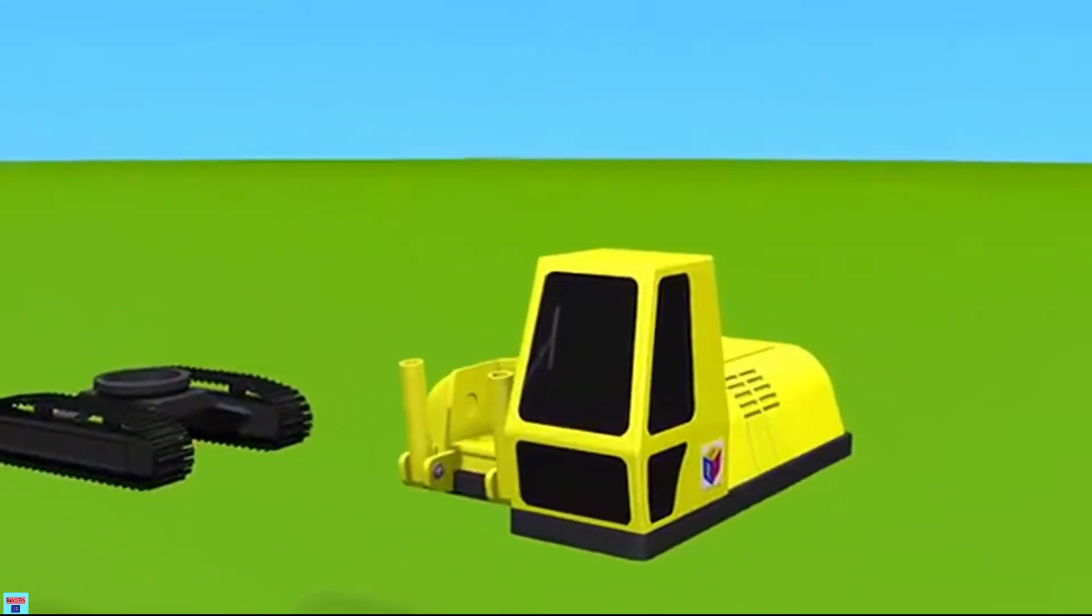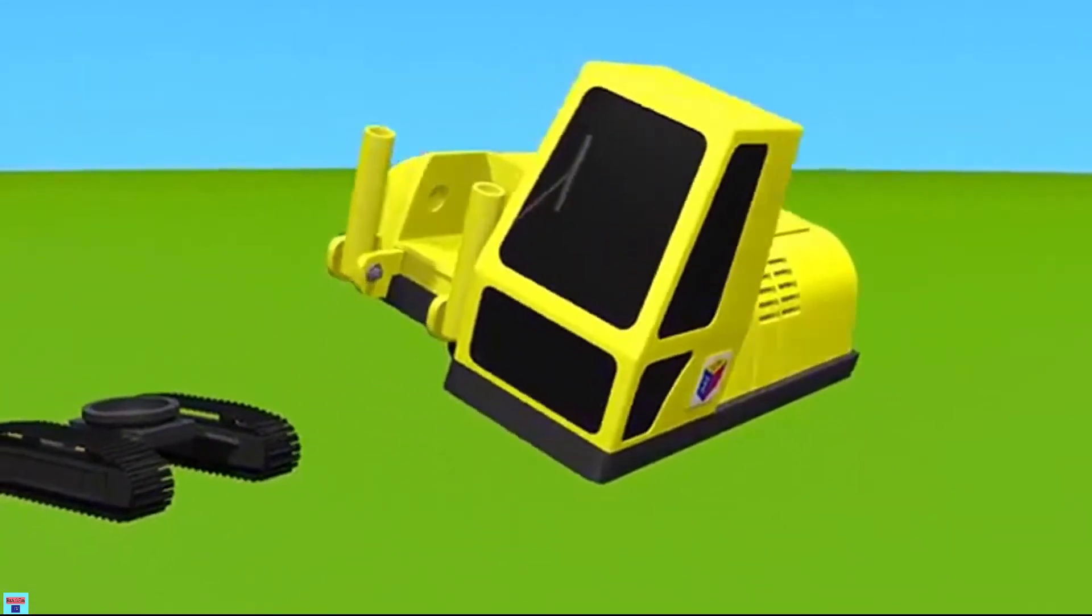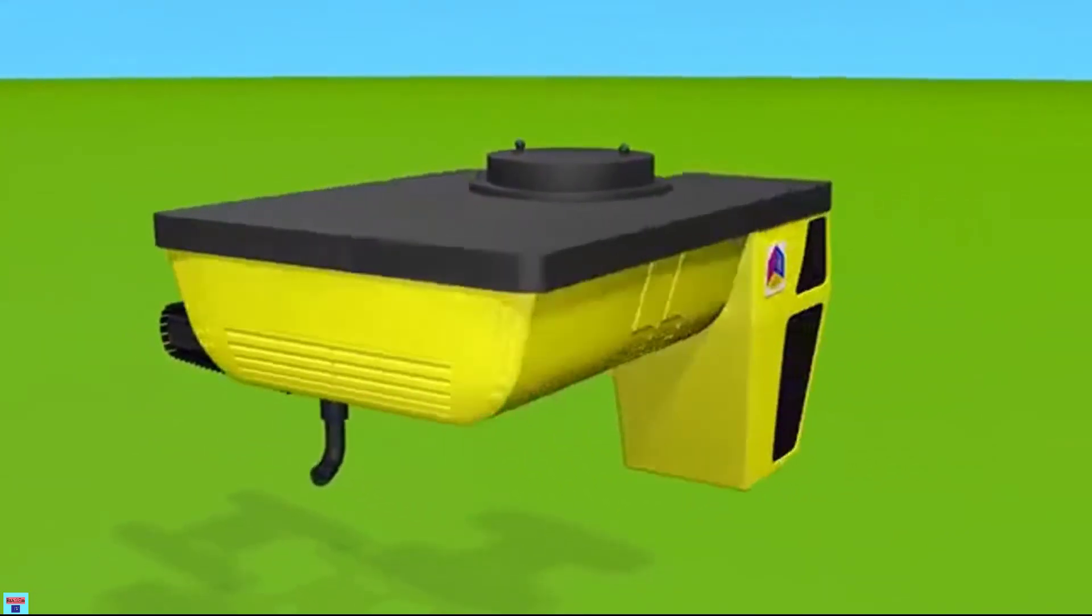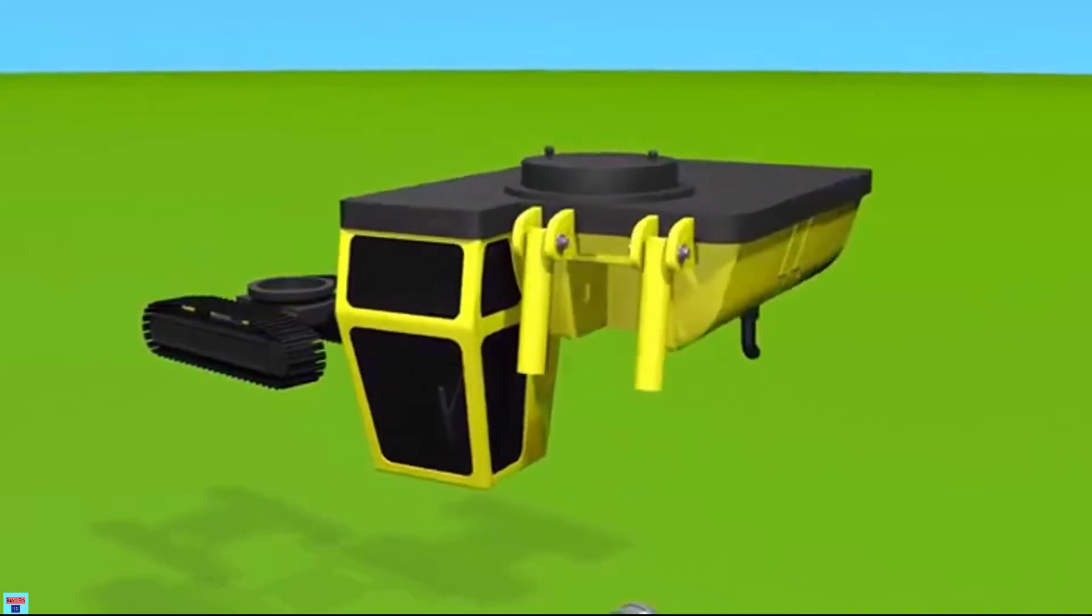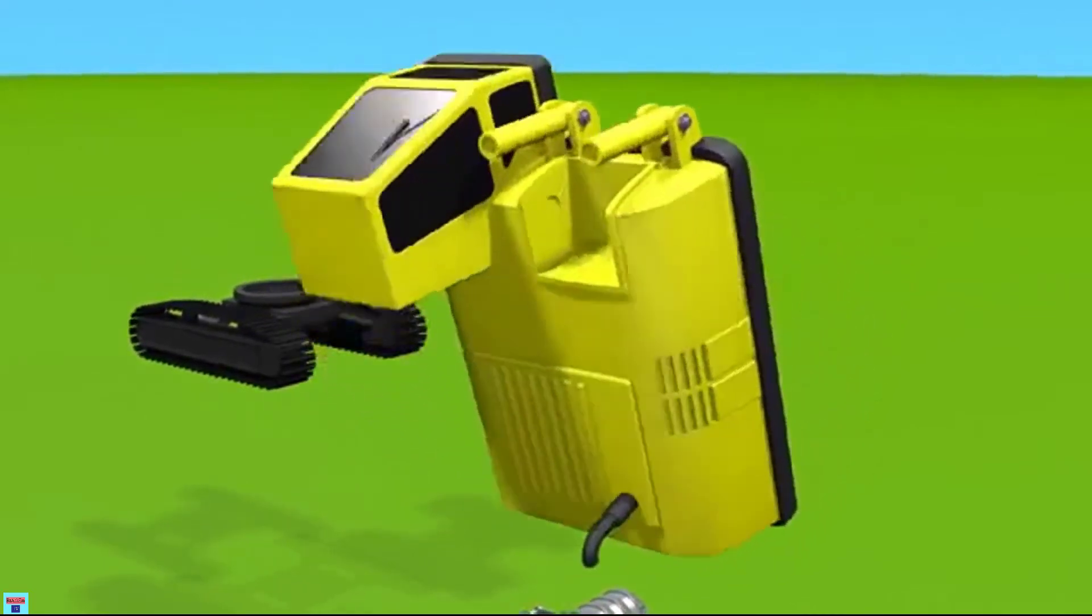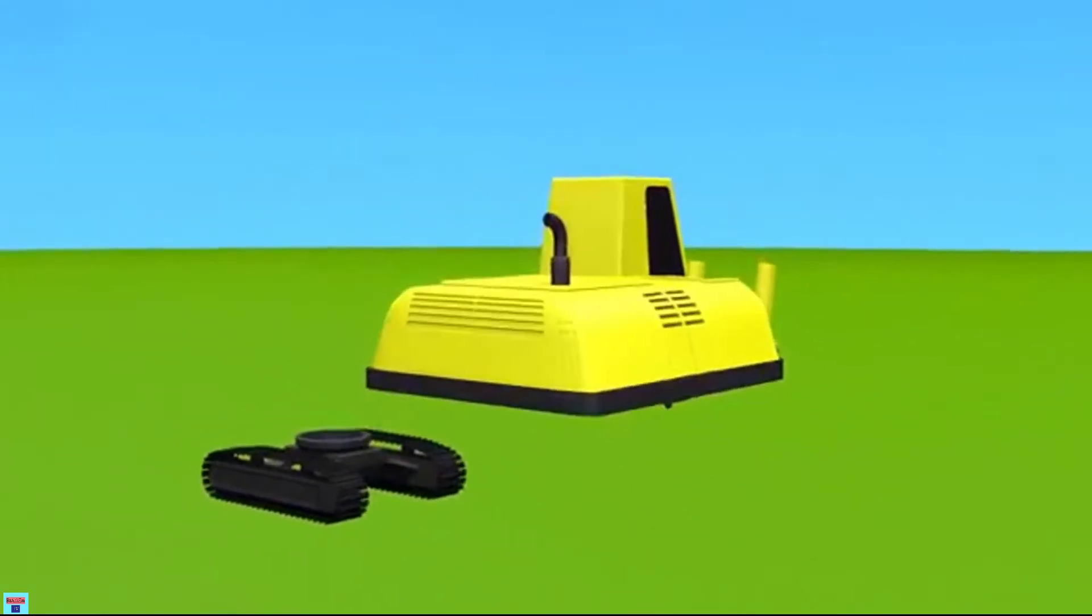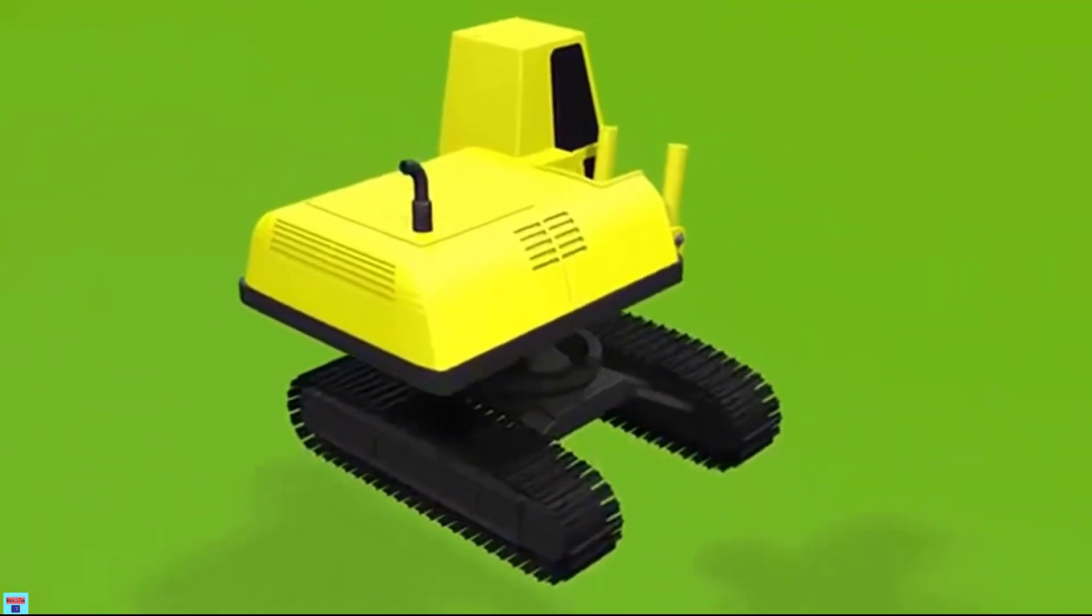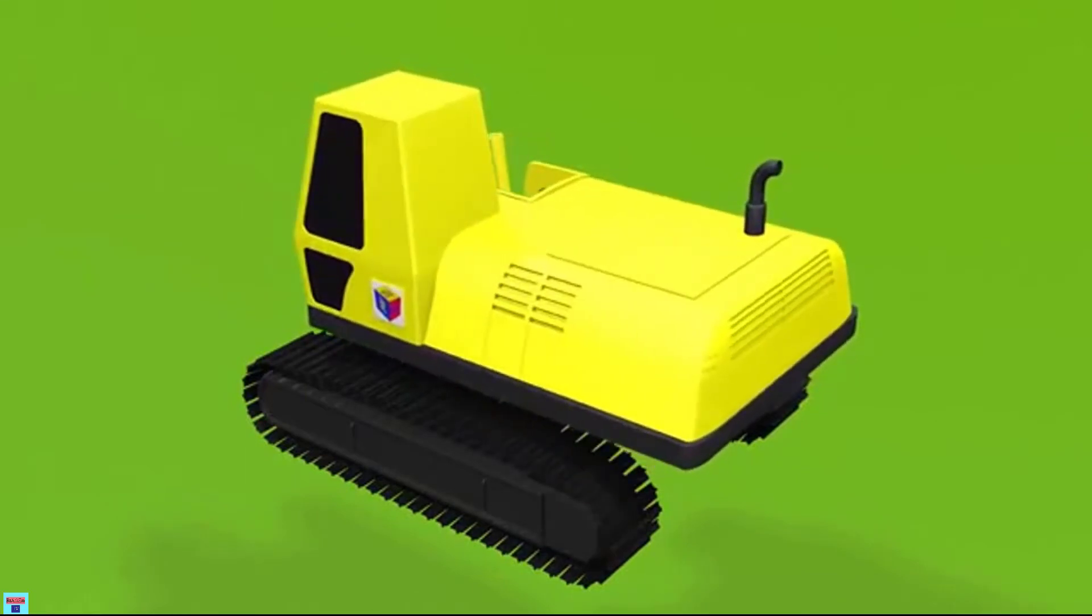This is the rotating platform. On the rotating platform, you will find the driver's cab, engine, pumps and counterweight. Let's set it on the track frame. The platform joins with the track frame with the help of the slewing device.